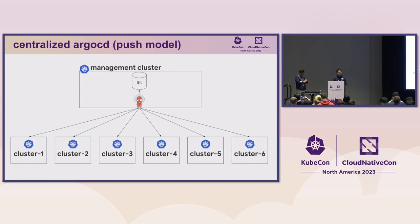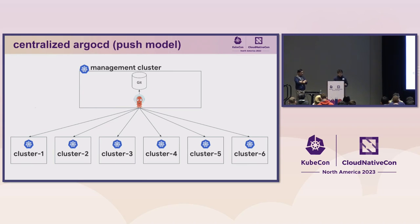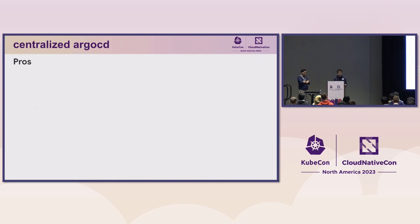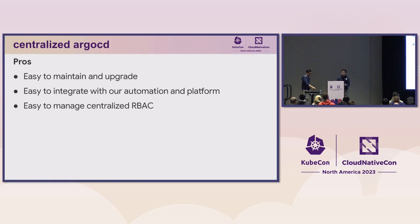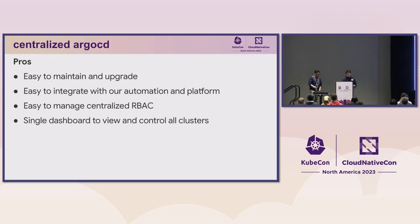In the hub and spoke model, we have a management cluster where we run our single Argo CD instance. This instance reads from Git providers, and using manifests stored in Git repositories, it pushes objects across all registered target clusters. The benefits include being very easy to maintain and upgrade — we only need to upgrade one instance — easy integration with our automation platform, easy centralized RBAC management, and a single dashboard to view all applications.